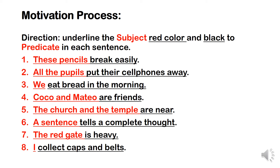All subjects are underlined with a red color, and predicates are underlined with a black color. In making sentences, remember a sentence expresses a complete thought or idea, which is composed of a subject and a predicate. The subject is the doer of the action, or the one spoken of. The predicate tells about what the subject does.